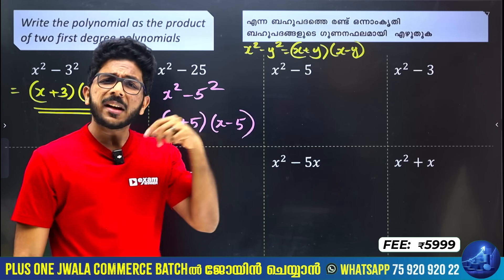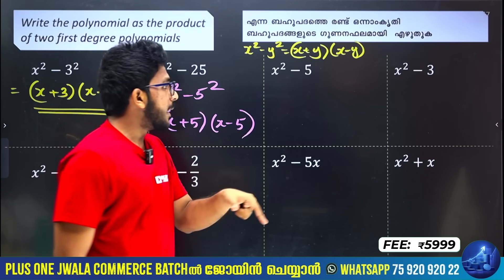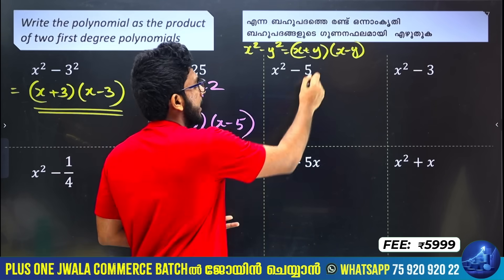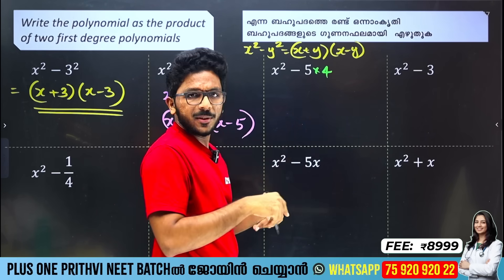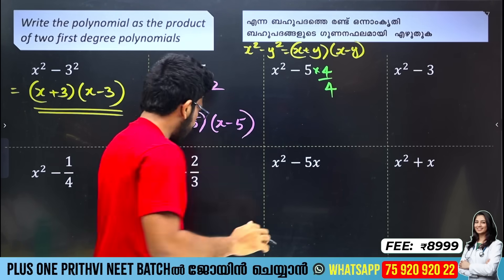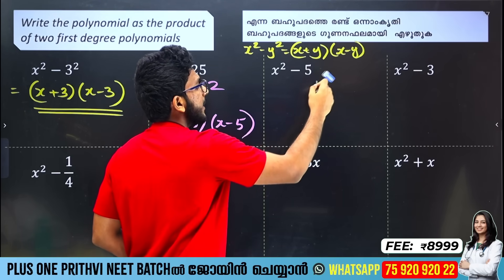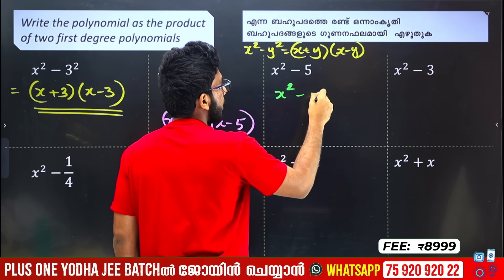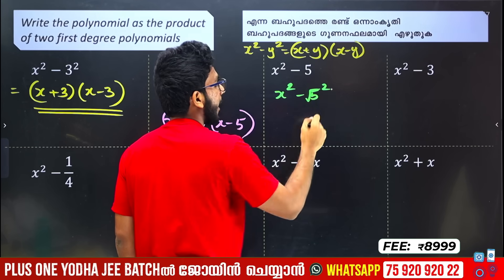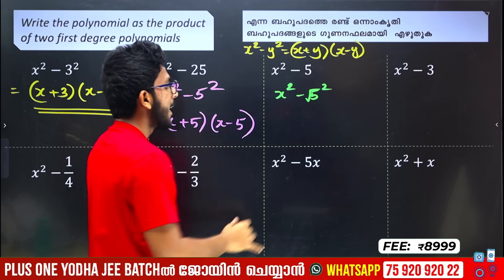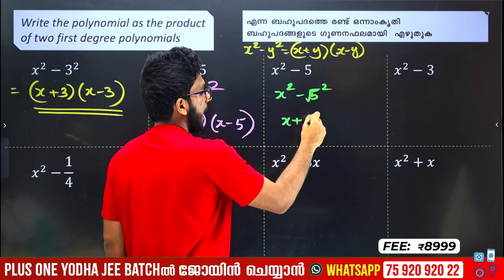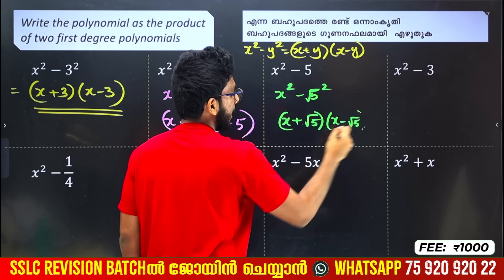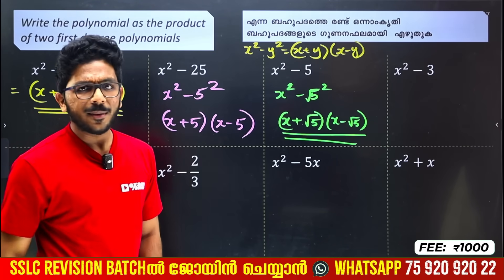x² minus 5. We have √5 as the square root. So x² minus (√5)² equals x plus √5 into x minus √5. If you want to use the square root, you can use it and apply the opposite sign in the mathematics.